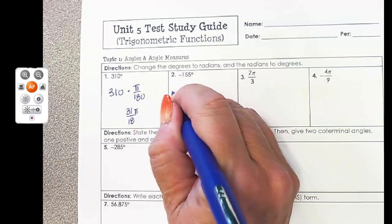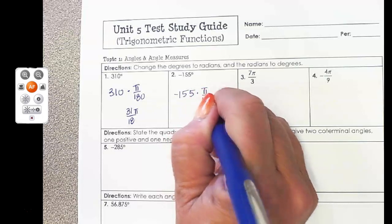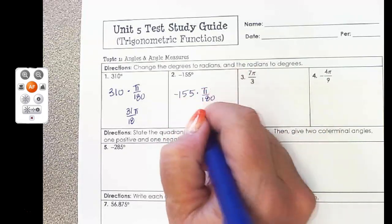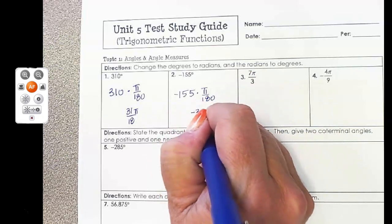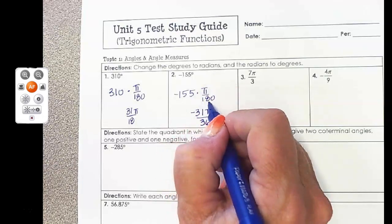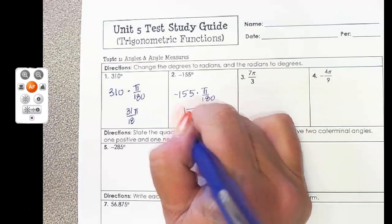Negative 155, the process is the same whether it's positive or negative, times π over 180. I put that into my calculator and do the reducing, and I leave the π out when I do the reducing. So I'm just putting in negative 155 divided by 180, and I get negative 31π over 36.